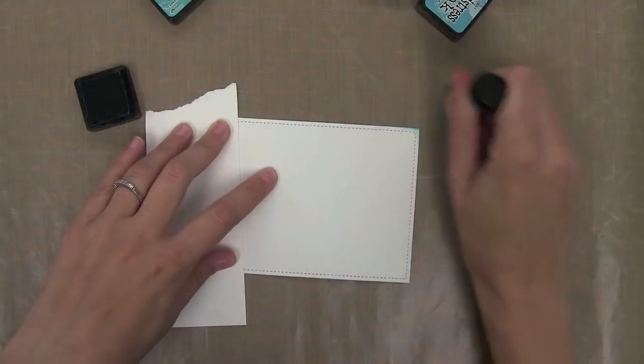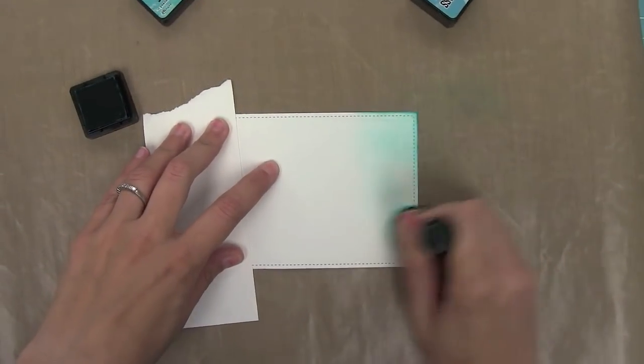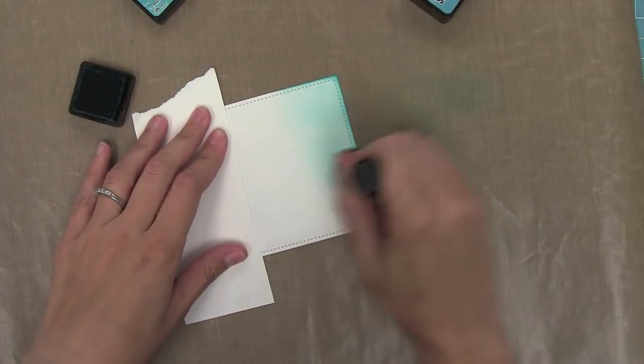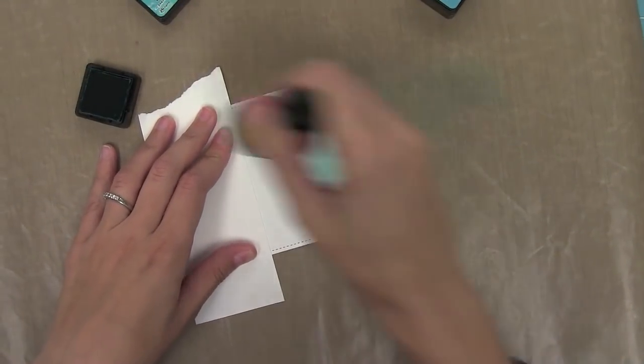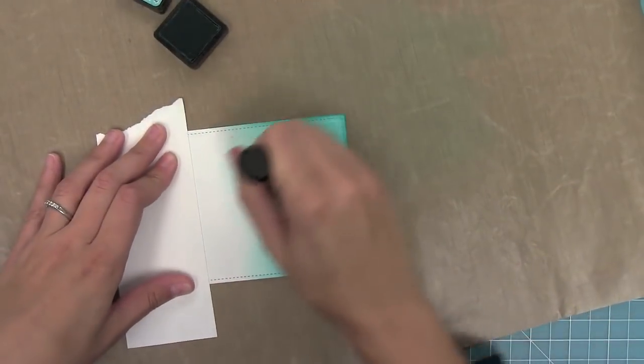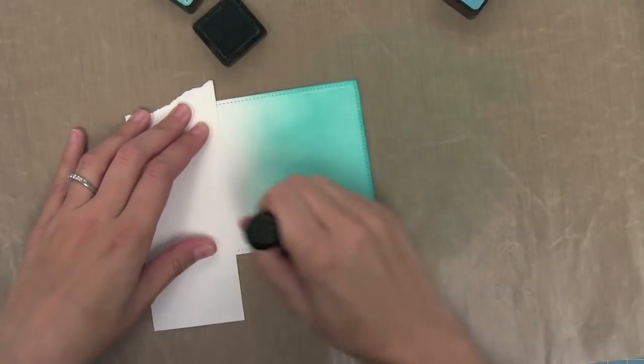Now I've cut a piece of Neenah Solar White cardstock with a stitched rectangle and I'm going to start doing some ink blending. I'm starting with peacock feathers, starting off the paper and then moving on to the paper to make sure I don't get any harsh edges. I'm going to keep building up that color until it's nice and dark.